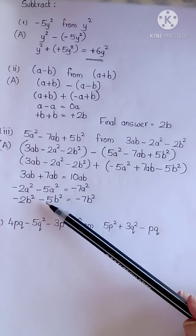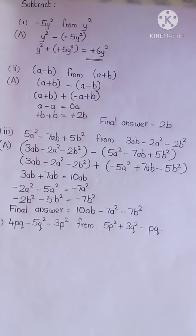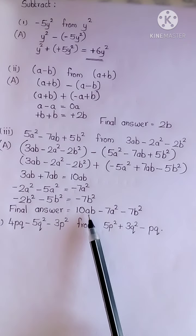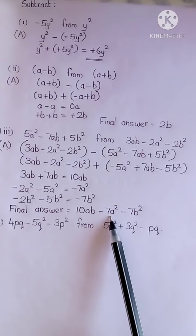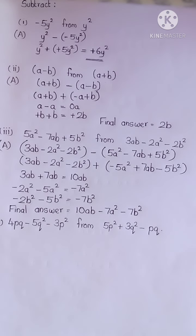Negative 2 and negative 5 give negative 7b square. So the final answer will be 10ab minus 7a square minus 7b square. This is the basic concept which you have to apply while subtracting two algebraic expressions.